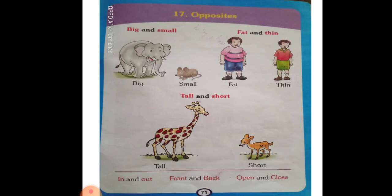Open and close. Again — big and small, fat and thin, tall and short, in and out, front and back, open and close. Children, these are the opposites.